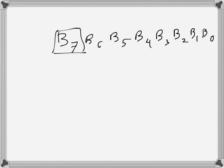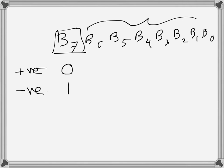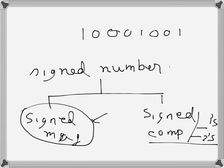When the most significant bit is zero, the number is positive. When it is one, the number is negative. The remaining seven bits are used to represent the magnitude of the number.